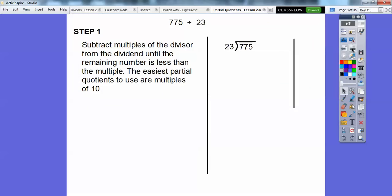Let's go ahead and subtract a multiple of 10 of 23. So what's 23 times 10? That's 23 with a 0, so that's 230. We're going to subtract these multiples of the divisor right here. So 10 times 23 is 230. When we subtract 775 minus 230, we get 545.